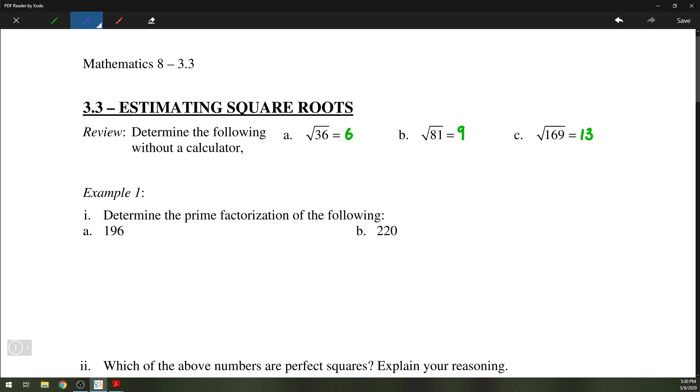Now if you're given an unfamiliar number and you want to determine if it is a perfect square or not, we use prime factorization. Let's look at the prime factorization of 196 and also 220. In the case of 196, we can divide by 2, we have 98, which is even, so we can divide by 2 again. Then we're left with 49, which we know is 7 squared, so 7 times 7. The prime factorization of 196 is 2 times 2 times 7 times 7.